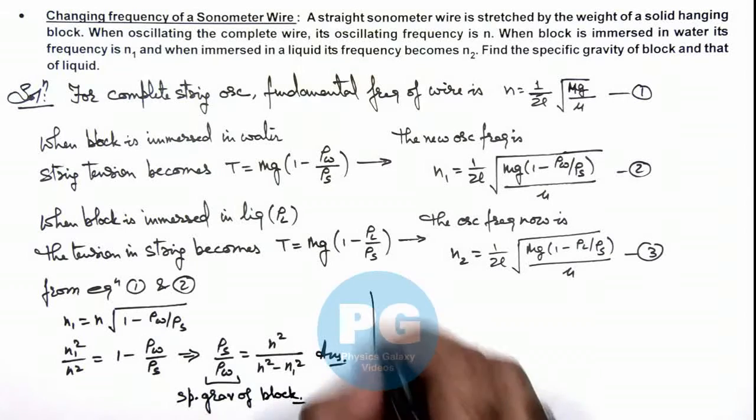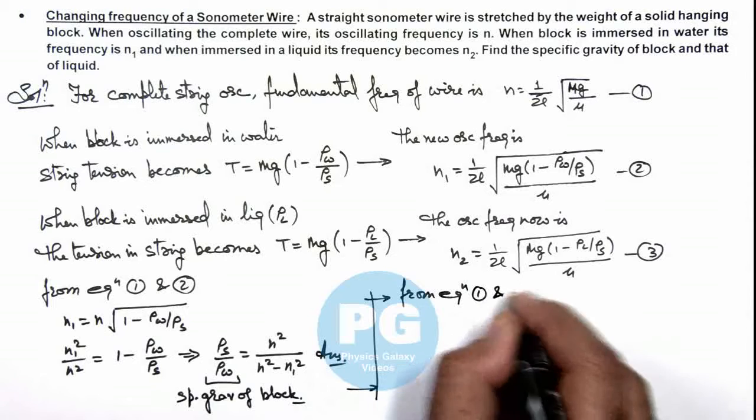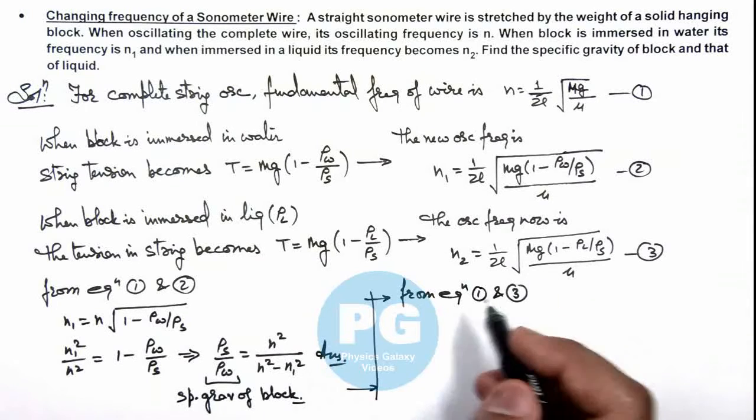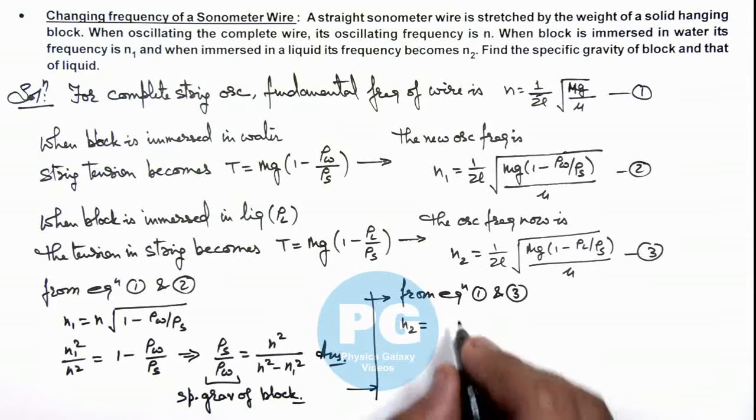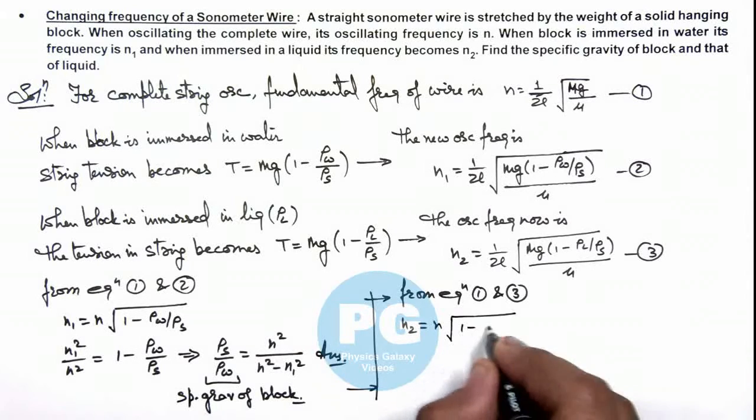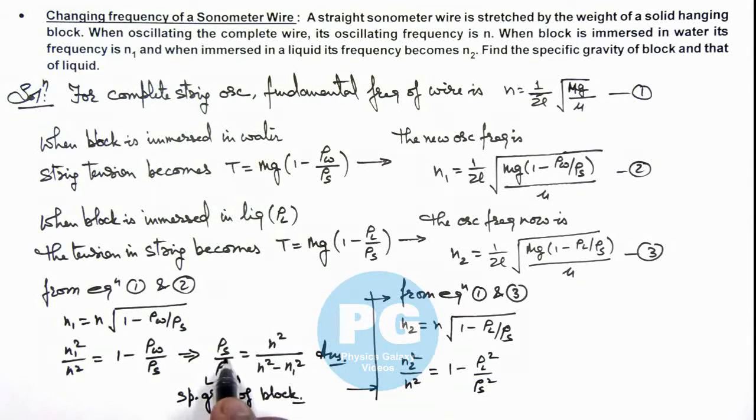Similarly, from equations 1 and 3, we get n₂ = n√(1 - ρ_liquid/ρ_solid). Squaring this gives n₂²/n² = 1 - ρ_l/ρ_s. We can substitute the value of ρ_s from the previous result and simplify.